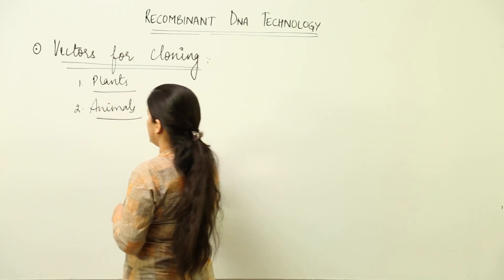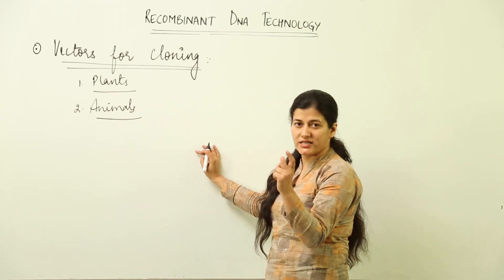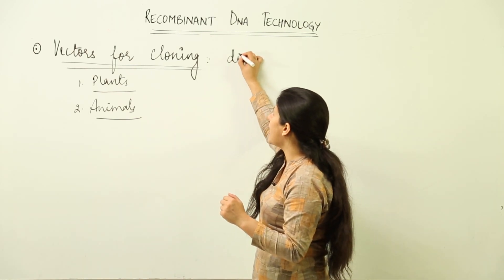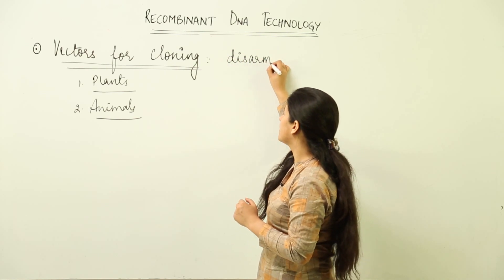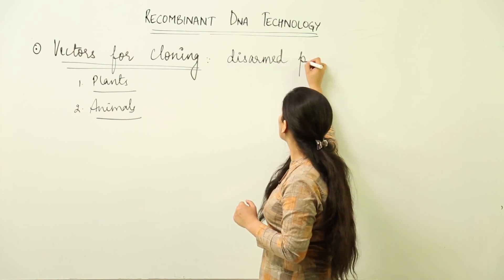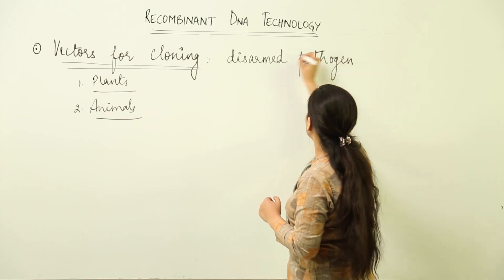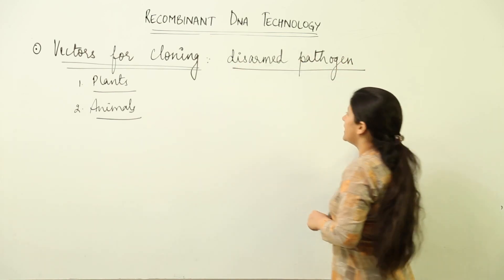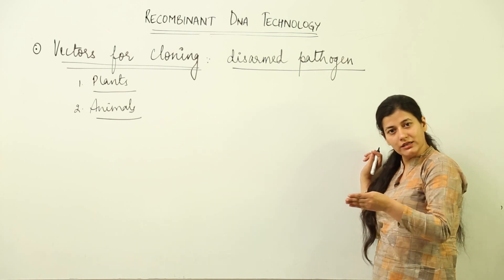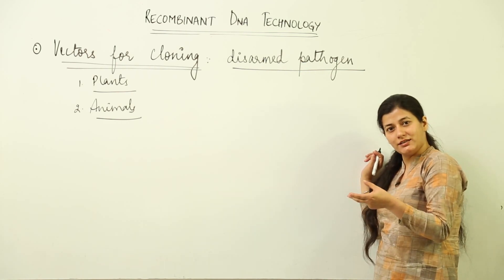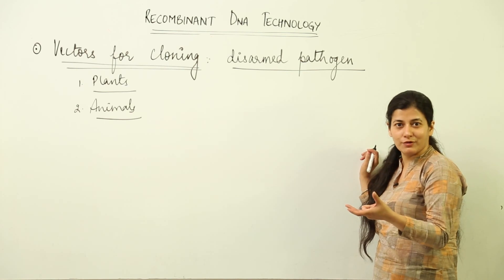When I talk about plants and animals, we are dealing with an aspect where we talk about disarmed pathogen. It's like sending a militant or a terrorist with a gun, but instead of bullets inside that gun you have put flowers. That would be quite a funny instance, but why am I saying this?